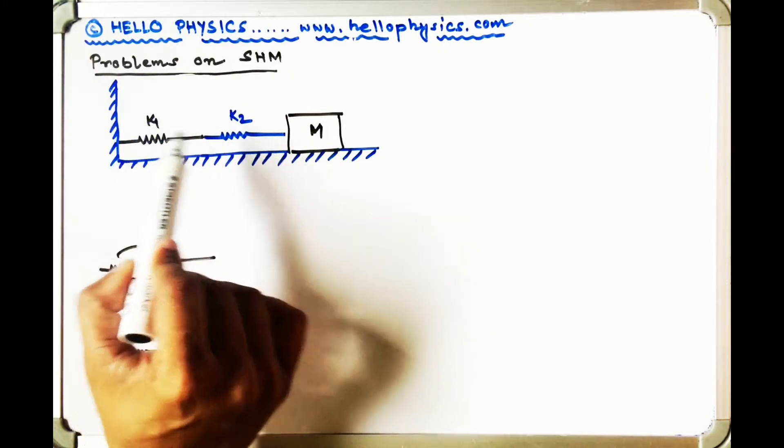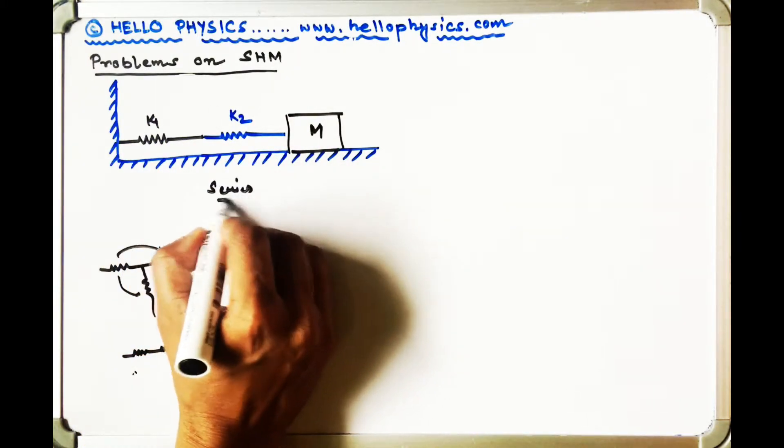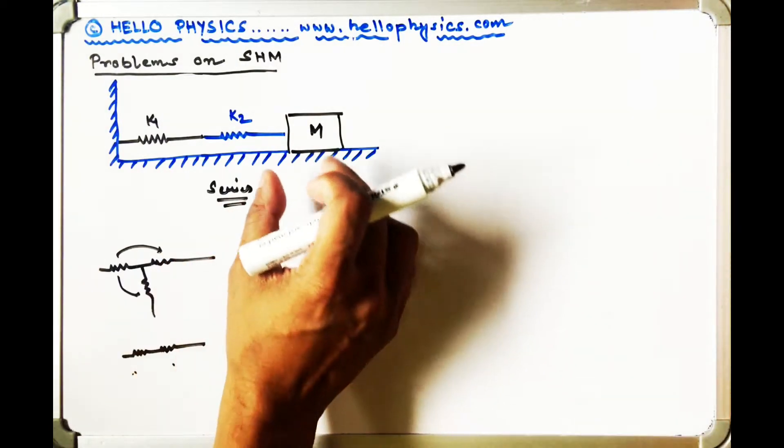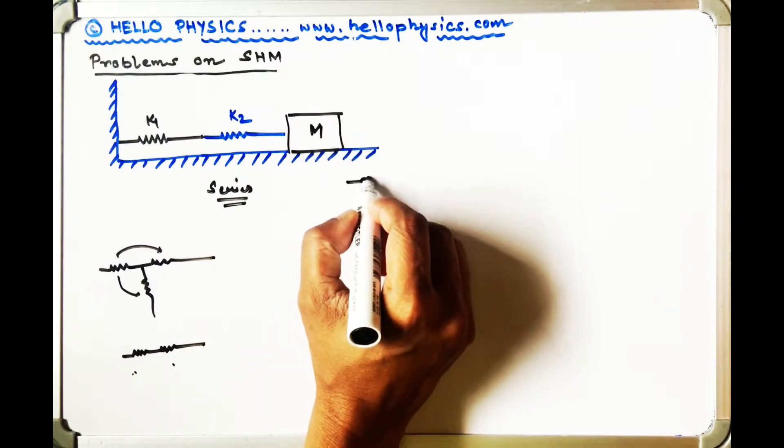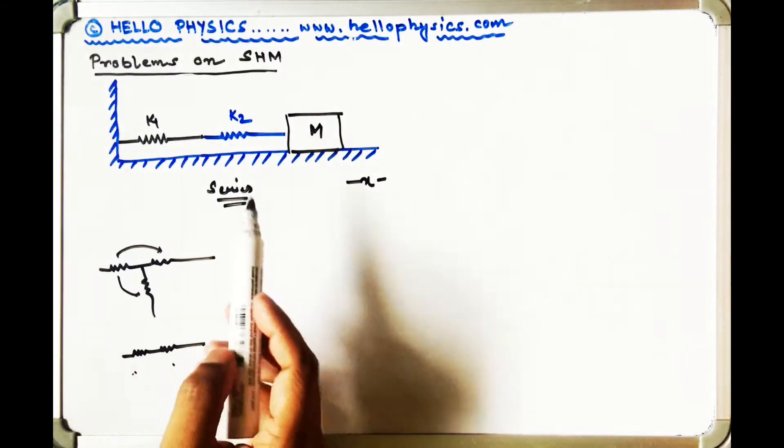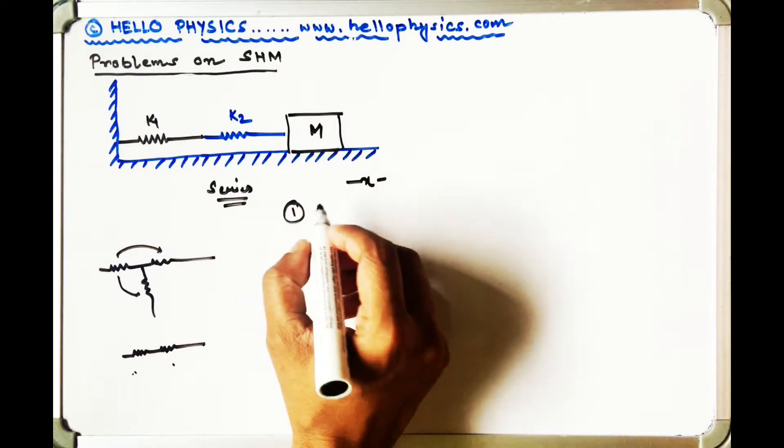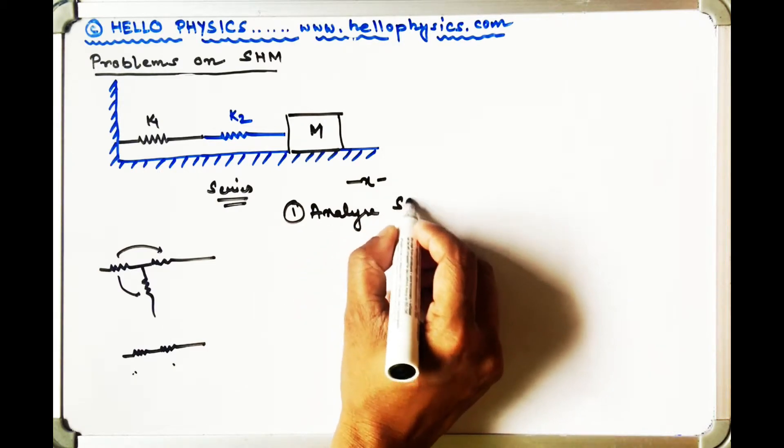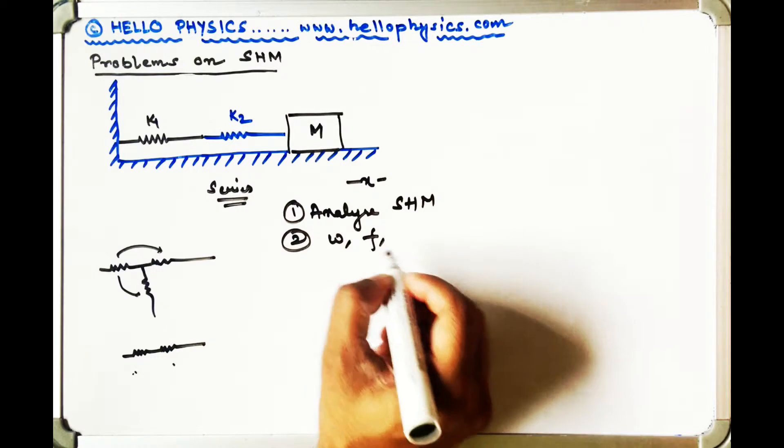So the springs over here are in series connection. What you have to do is analyze if this object is pulled by a certain displacement X, if the object would undertake simple harmonic motion. First of all analyze SHM, then find out of course omega, f, and T.